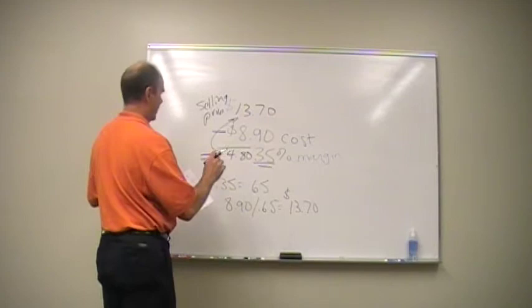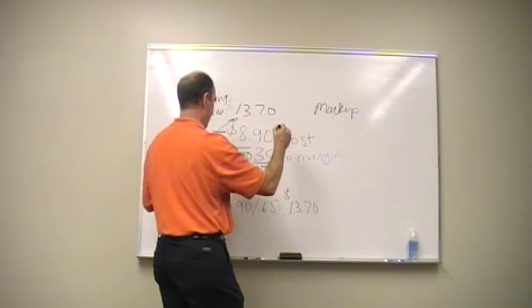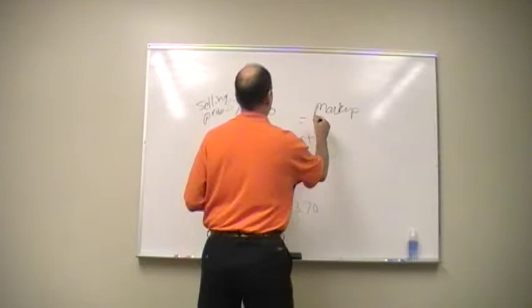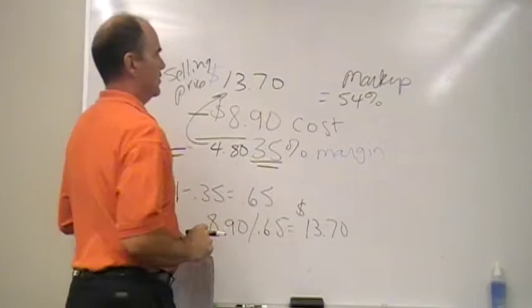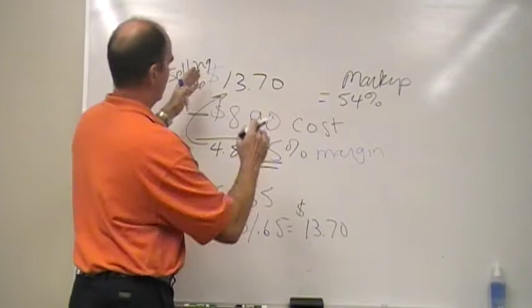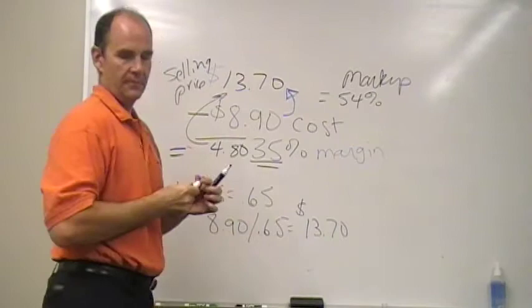Now, let's say you were to take this times 1.35, which is wrong. You would end up with a price over here of markup. Our markup here ends up being 54%. 1.54 times 8.90 gets you $13.70. Our markup is 54%. So, we have to have a 54% markup to get 35% margin. They are two different numbers. Always work through your calculation. Your selling price minus your cost of goods equals your margin. Your markup goes from here to here. This here is 54%. That is how you figure it.